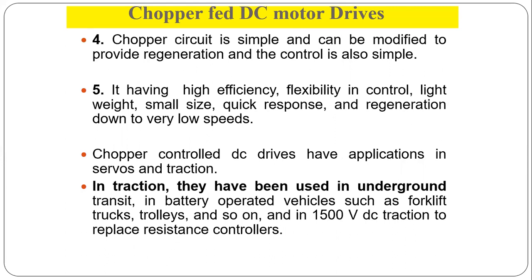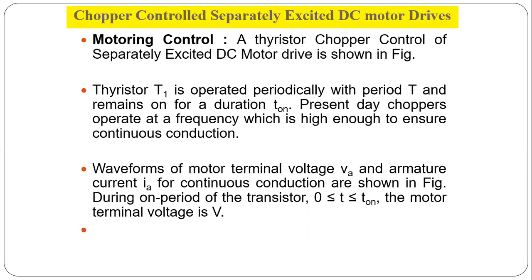Chopper-controlled DC drives find applications in servo and traction systems. In traction, they have been used in underground transit, battery-operated vehicles such as forklift trucks, trolleys, and in 1500-volt DC traction to replace the resistance controller.